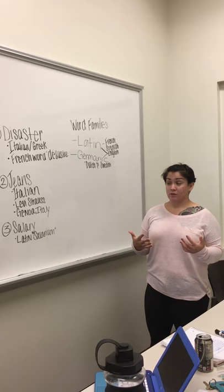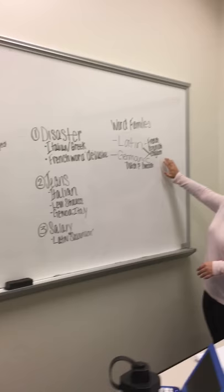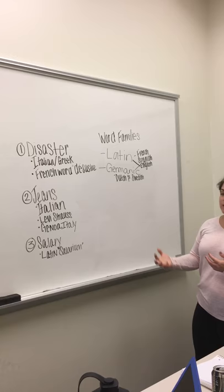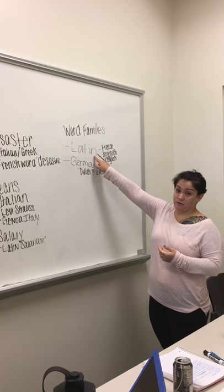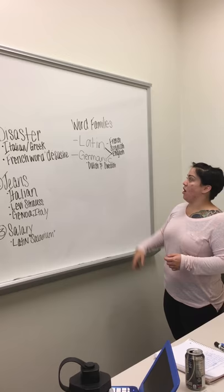Your quick bit for today, a little added knowledge: word families. That's indicative of words that are similar. There are two very popular ones — Latin and Germanic. French, Spanish, and English are known to have Latin origins. Dutch, Swedish, and also English have Germanic origins, also known as word families.